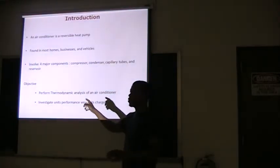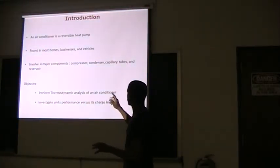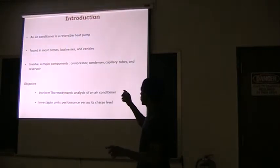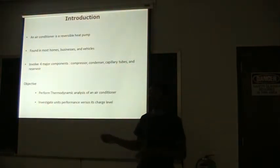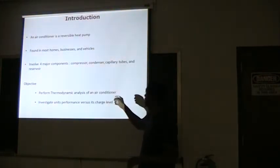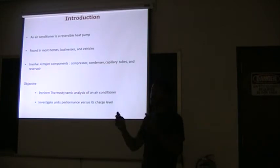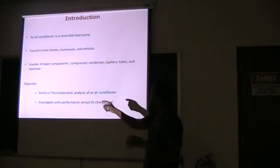And this is incorrect, it shouldn't be reservoir, it should be evaporator. So you have compressor, condenser, expansion, which is the capillary tube and outer system, and the evaporator.